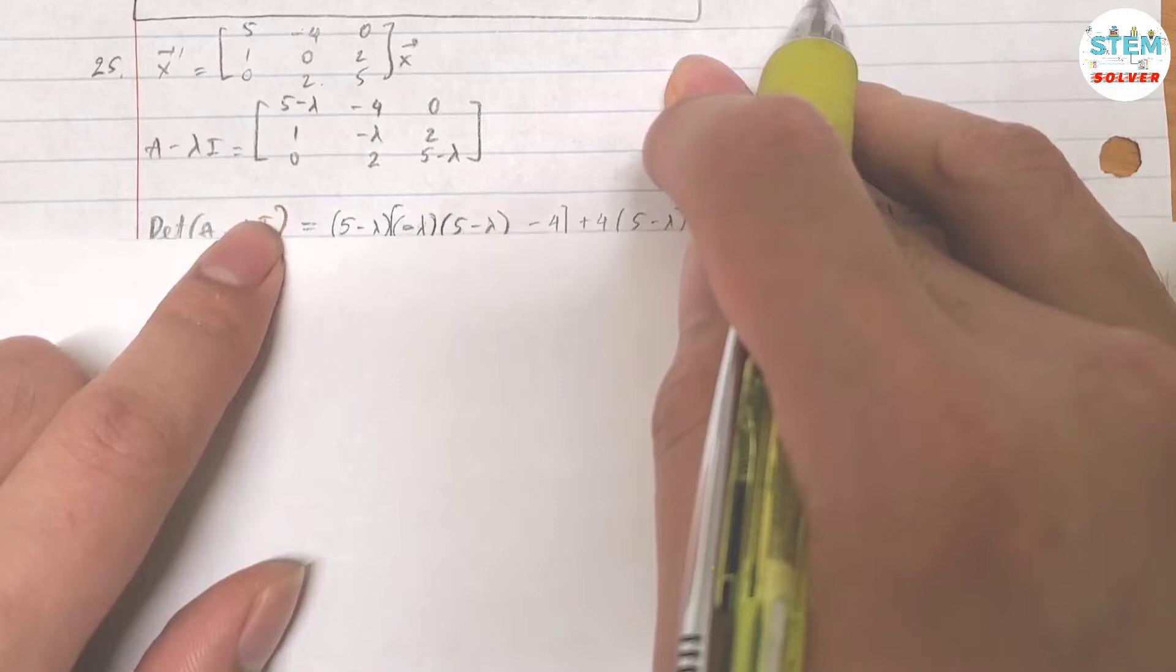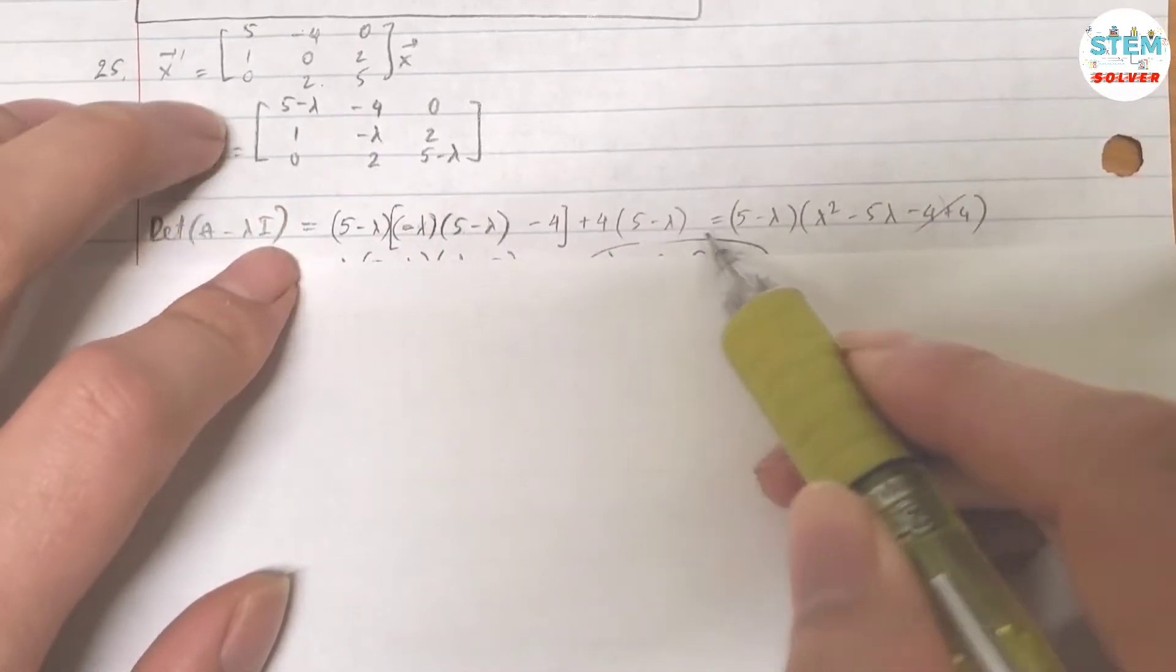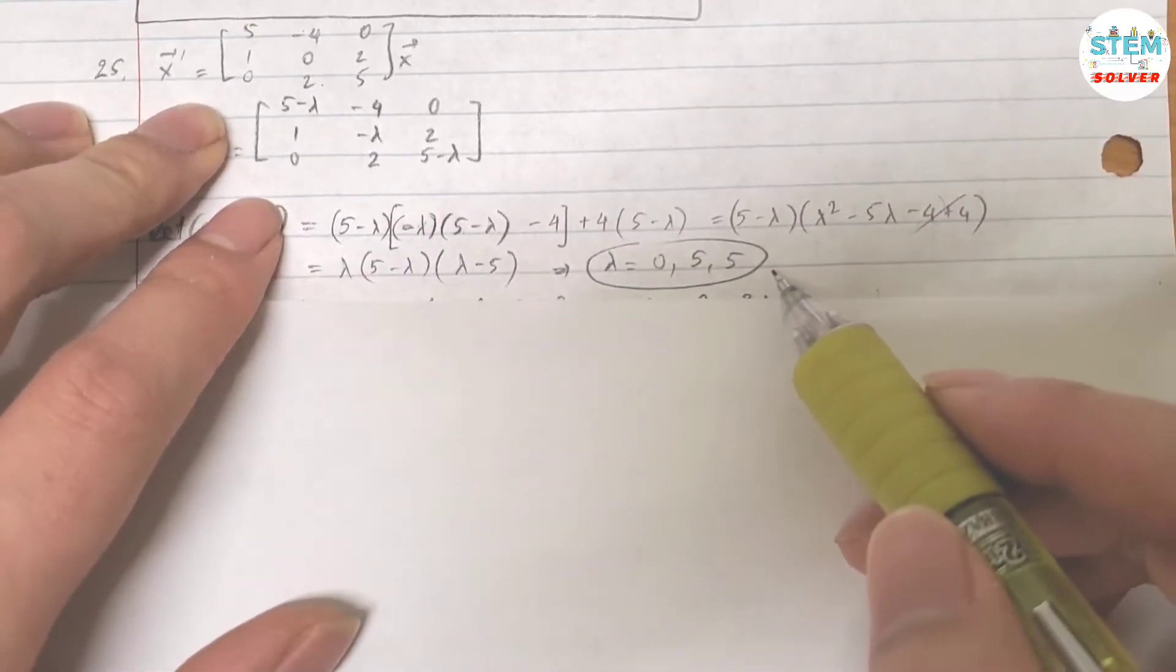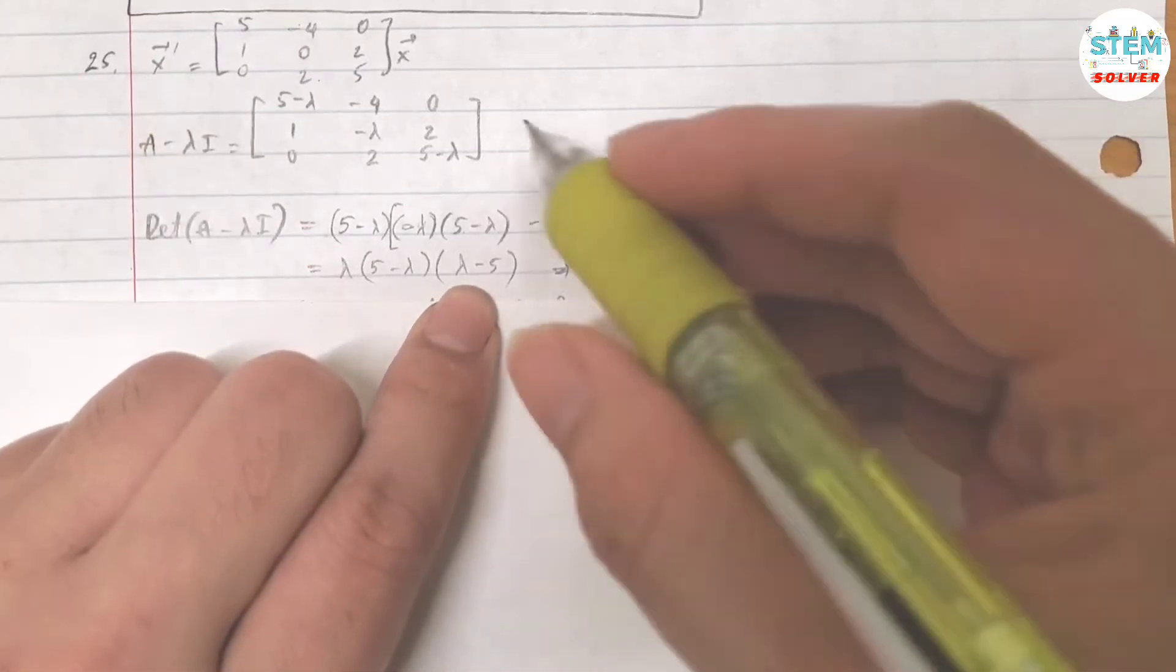And then find its determinant, that gives you this thing. Just build this out and then simplify it. You will get this, set this equal to 0.